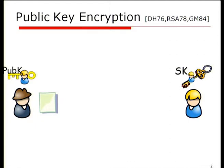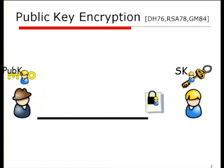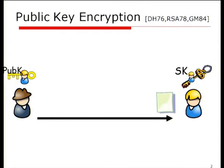One of the great advents of cryptography is public key encryption, where Bob can encrypt a message to Alice just knowing her public key, send it on over, and then Alice can decrypt knowing her secret key.